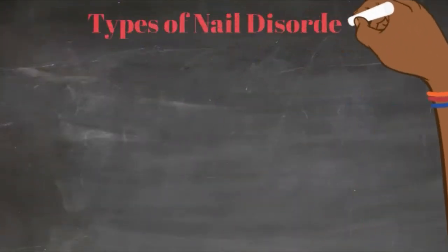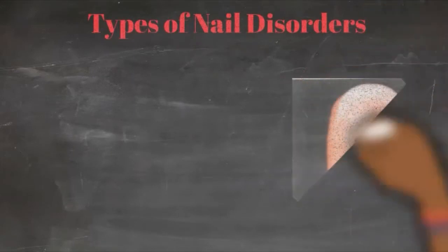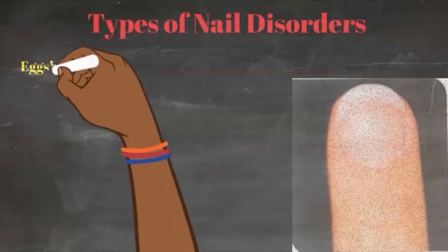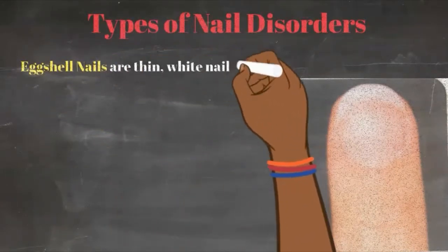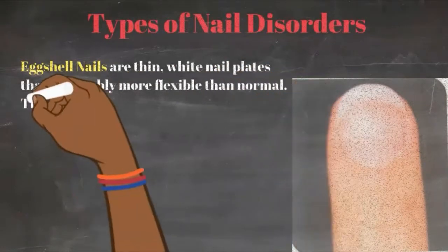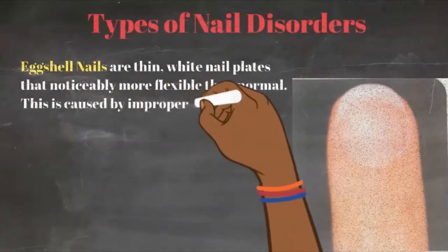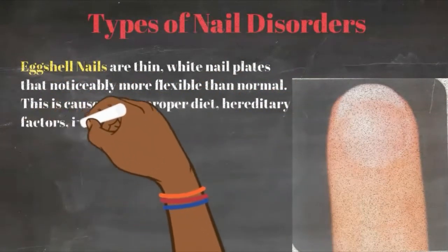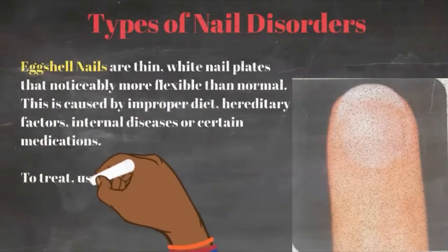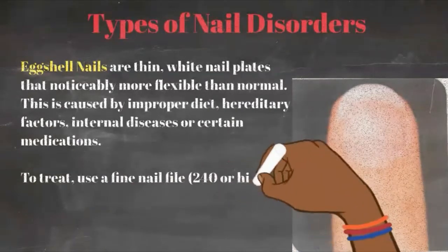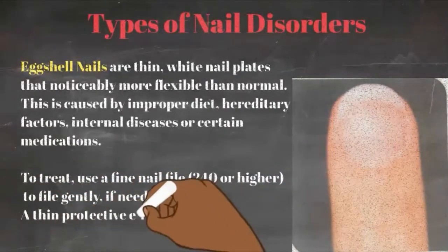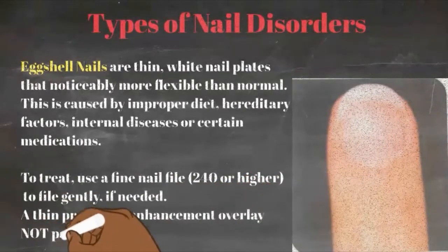Another type of nail disorder you'll come in contact with is called eggshell nails. These are thin, white nail plates that are noticeably more flexible than normal. This is caused by improper diet, hereditary factors, internal disease, or certain medications the client might be taking. To treat this type of nail, use a very fine nail file, like a 240 or higher, to file gently if needed. A thin protective overlay enhancement might help the client as long as it does not pass the free edge.